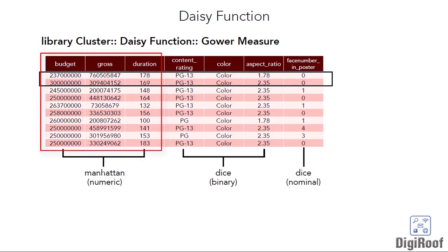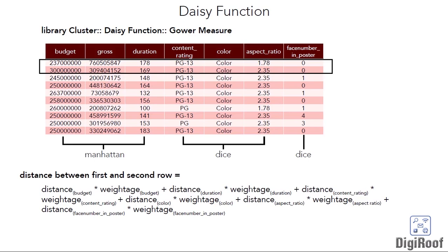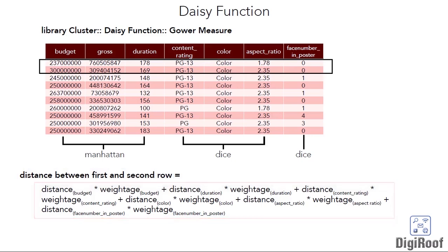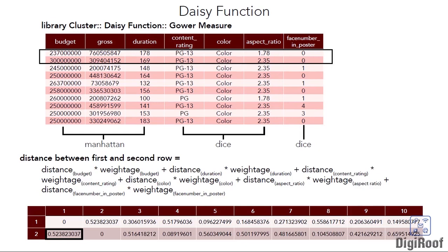Suppose a dataset has three numeric, three binary, and one nominal variable, and we are using the Gower method to find the distance between the first and second rows. The Gower measure would first calculate the distance for all columns based on their data type. These distance values then need to be combined to produce a single value representing the distance between the two rows. To combine these distances, the Gower metric uses the weightage of the variables. For instance, if the nominal column was converted to five binary columns, the combined weightage of those five binary columns would remain one, since they were formed from a single variable. This way, using the weightage concept, we are left with a single value representing the distance between the two rows.